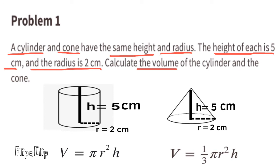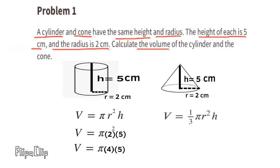To calculate the volume of the cylinder, we'll multiply pi times r squared times the height. Since the height is 5 and the radius is 2, we'll multiply pi times 2 squared times 5, or pi times 4 times 5. 4 times 5 is 20. The volume of the cylinder is pi times 20 centimeters cubed.